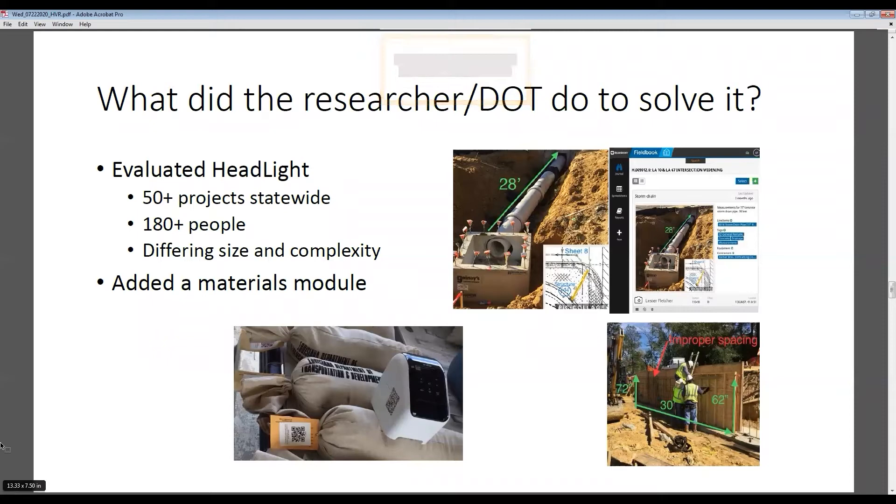Whereas before, those pictures would reside on somebody's hardware or computer or some type of shared drive in an office, and depending on how well they were labeled, it would be difficult to find construction documentation in the future. If you look at the bottom right corner, you can see the contractors installing reinforcing steel for a retaining wall. It was annotated showing improper spacing and put in as an observation with the date it was recorded. Then we have another observation several days later showing this improper spacing has been corrected.